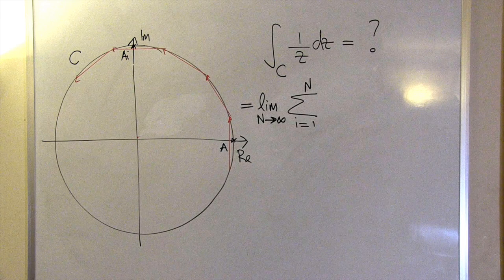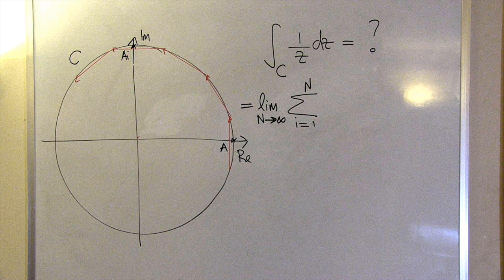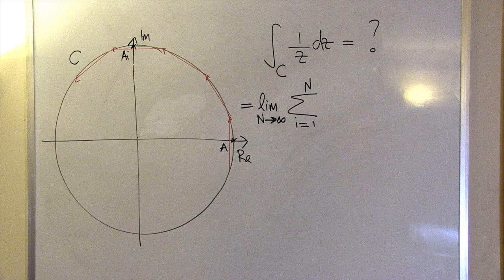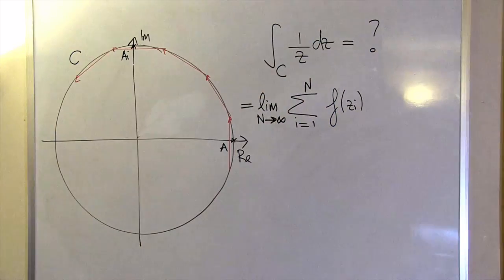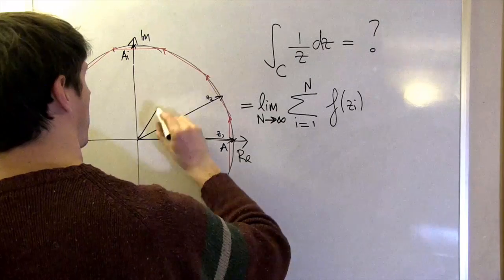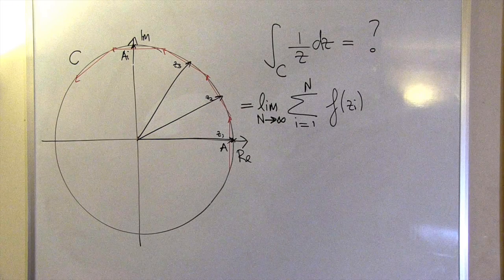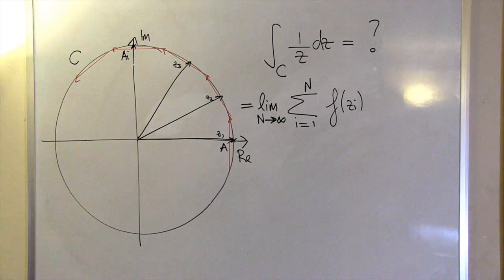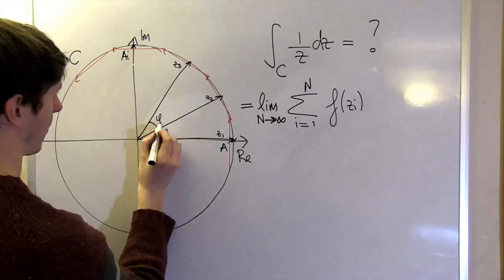As the first step to finding the integral on each of these pieces, we're going to need to know what the value of the function is on each of them. If the pieces are small enough, that's going to be very close to the value of the function on the circle. Let's be a little wild and use the value of the function halfway along the circular arc cut out by each chunk. That's at the points z1, z2, z3, and so on. By the way, notice how they divide the circle up into equal sectors of angle phi.